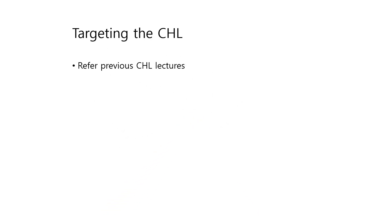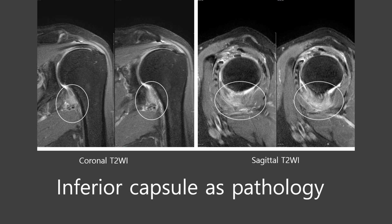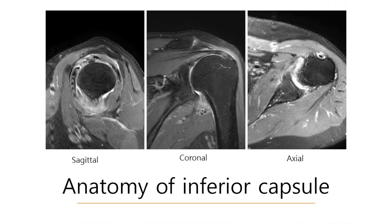Previously, I showed a video about the coracohumeral ligament — please review the previous video. Now I am going to show MRI pathology of the inferior capsule. Please use your imagination of the three-dimensional structure of the inferior anterior capsule. Coronal and sagittal T2 fat-saturation images show thickening and high signal intensity of the inferior capsule, on sagittal, coronal, and axial views.